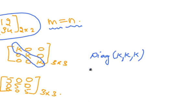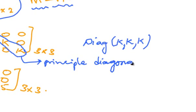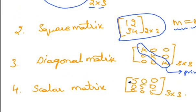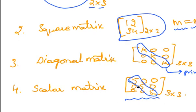The line along which the diagonal elements are present is known as the principal diagonal. A scalar matrix — a matrix in which the principal diagonal elements are the same and the remaining elements are 0 is known as a scalar matrix. For example, a 3 by 3 matrix in which the principal diagonal elements are all 5 — this is a scalar matrix with order 3 by 3.